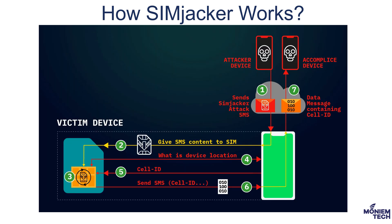To summarize the logic: the attacker's device sends the attack message to the victim device. The device passes the SMS content to the SIM card. The SIM card retrieves the device location and cell ID, and sends it back to the device. The device then sends this as a data message containing the cell ID to a device controlled by the attacker. The weakness here is the S&T browser with zero-trust security level on the SIM card.